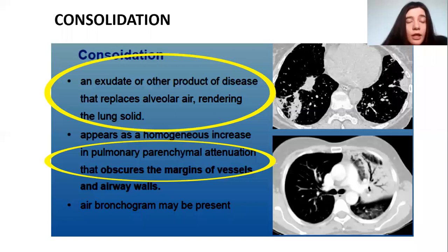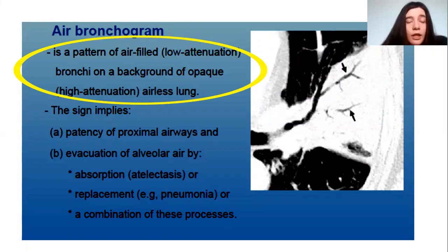The air bronchogram sign implies the patency of the airway and evacuation of alveolar air by absorption, as in atelectasis, or replacement, as in pneumonia, or a combination of these. We also have the crazy paving pattern, which is thickened interlobular and intralobular lines superimposed on a background of ground glass opacities. It is also reported in alveolar proteinosis.